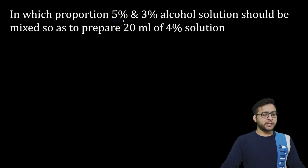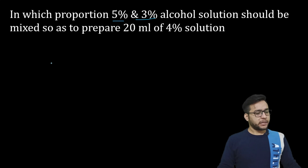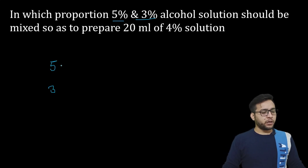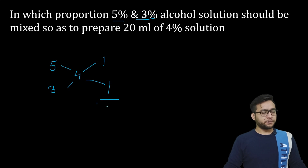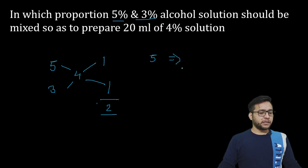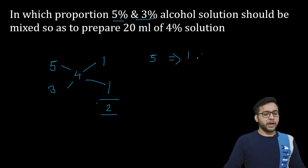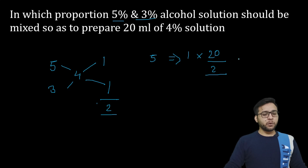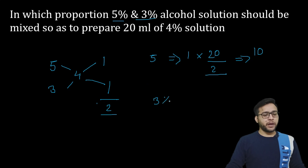Next question: 5% और 3% दे दिया गया है। इसी तरीके से 5 और 3 — बहुत आराम से solve कर सकते हैं। 4% हमें चाहिए — this is 1 and this is 1, total 2 parts। 5% का कितना चाहिए — यह 1 into बनाना 20 ml है, upon total — तो हम 10 ml, 5% का चाहिए। उसी तरीके से 3% का भी हमें 10 ml चाहिए होगा, तब हमारा 4% का बनेगा।